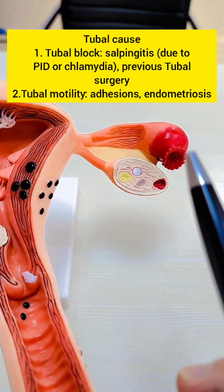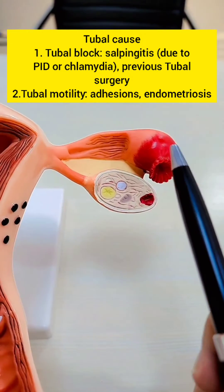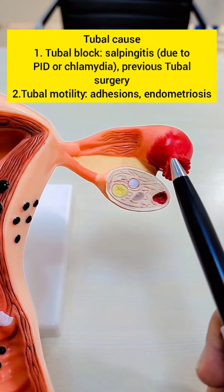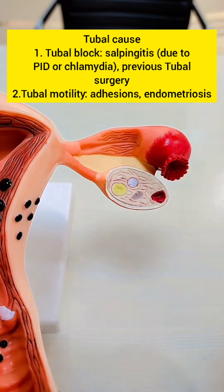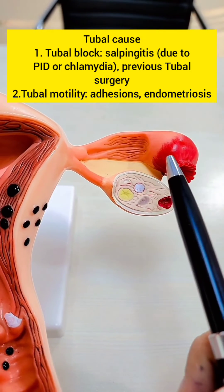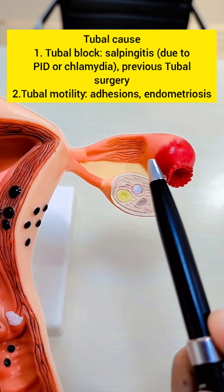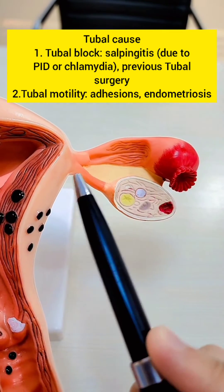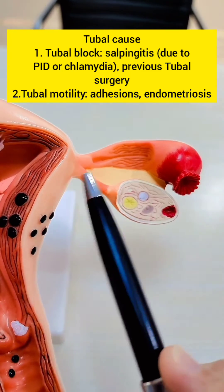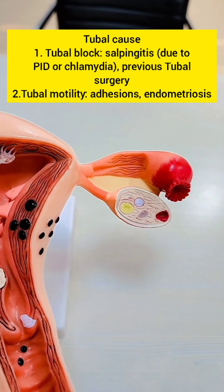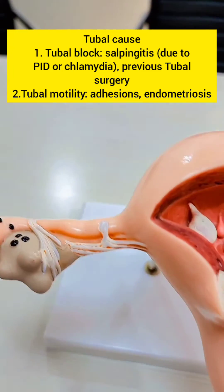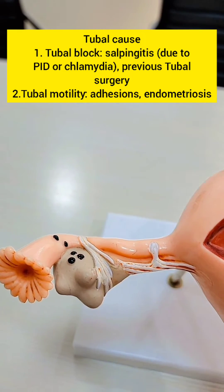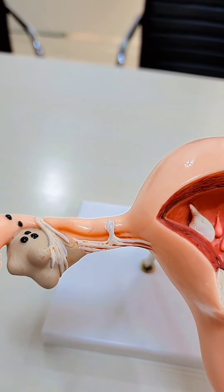Common causes of tubal factor infertility could be salpingitis — you can see the infection in the tube here — and this could be because of genital tuberculosis or because of chlamydial infection. We can also think of altered motility because of adhesions, which could be because of a previous surgery or because of endometriosis. You can see these black dots and these adhesions; these can alter the tubal motility.